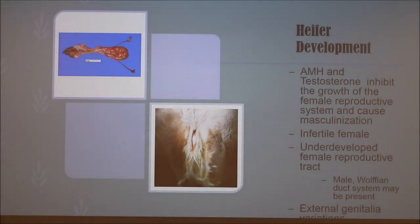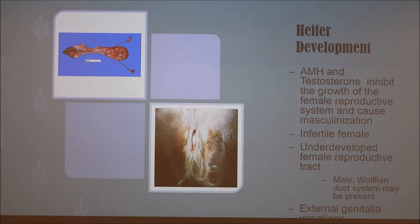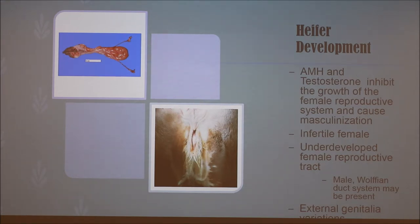Since the heifer calf is the one really affected, the hormones AMH and testosterone cause her to not develop properly in utero. These hormones inhibit the growth of the female reproductive system and cause masculinization. The resulting heifer calf is not only born sterile, but the female reproductive tract is usually not fully developed. For example, there is usually reduced development of the paramesonephric duct system and sometimes development of the Wolffian or mesonephric duct system, which would normally be found in the male calf. She also usually has small ovaries, a short vagina and reproductive tract, and no uterine body or cervix.